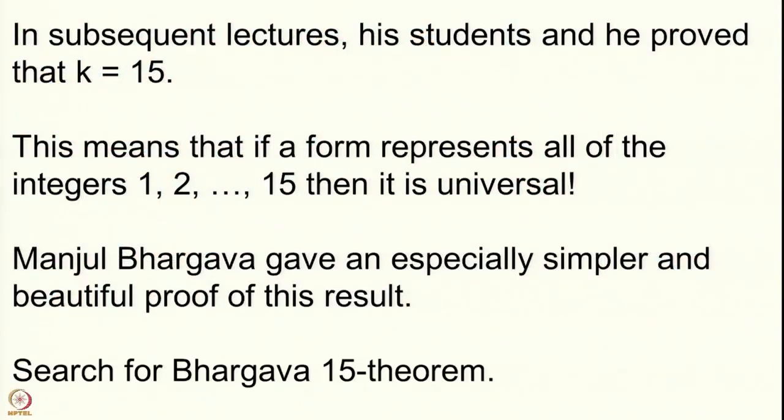The introduction to the proceedings is by Conway, who describes the whole event: introducing the problem to the class, the solution by his students and him, inducing Manjul Bhargava to solve the general problem, and ultimately Bhargava solving it. If you want to read more, search for 'Bhargava 15 theorem.' For the generalized forms with cross terms, the corresponding number is 290 — if a form represents every integer up to 290, it is universal. This is an important contribution from the Indian-origin mathematician Manjul Bhargava.